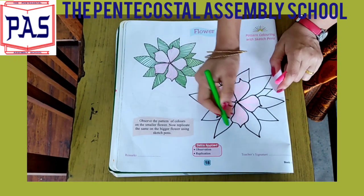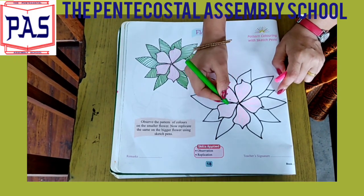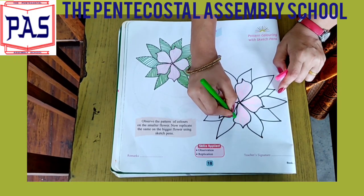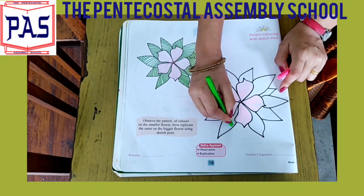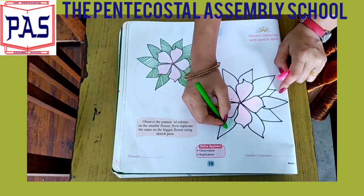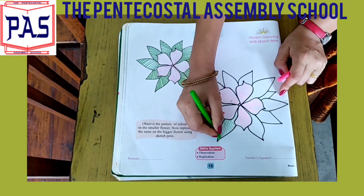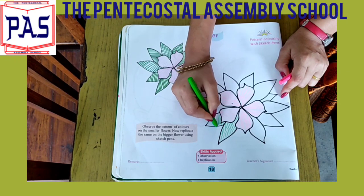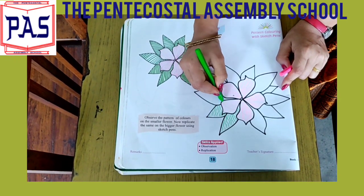Now for the outer petals of this flower, we are using green color. You will watch the video and you can see how I am coloring the outer petals of this flower. By applying the same method, you will also color this picture given in page number 18 of your art activity book at your home.